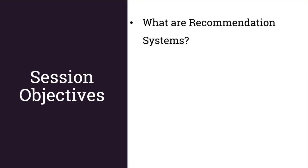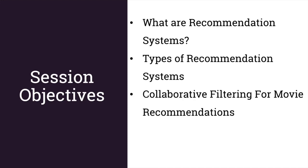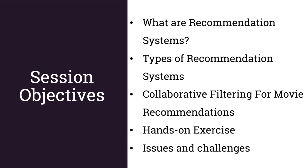We will start off with understanding what recommendation systems really are and study some of its popular types. Then we will move on to collaborative filtering and do an example to give you some intuition behind how it works. We will also go over a hands-on exercise and implement this recommendation system in Python. At last, we will discuss some of the issues and challenges you might come across if you put your recommendation system to production.